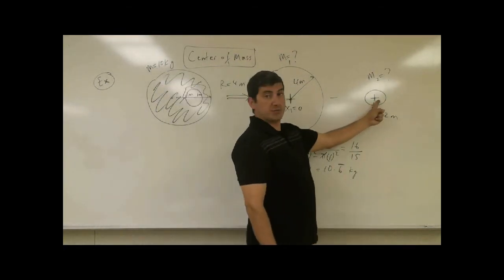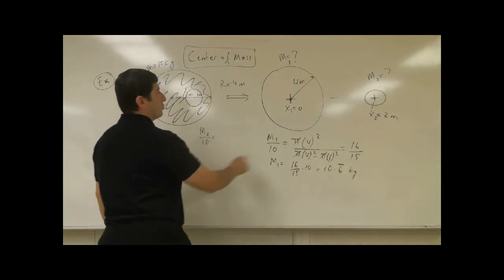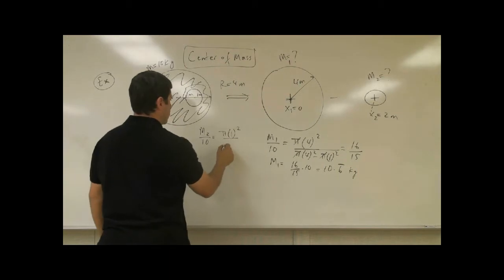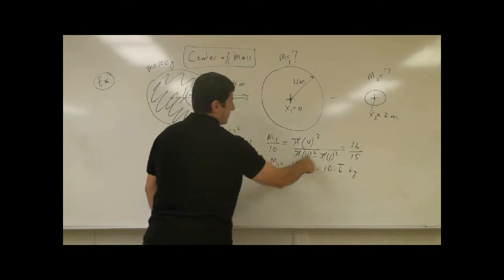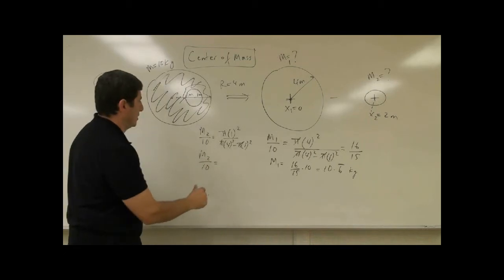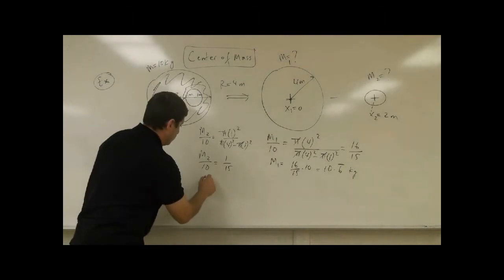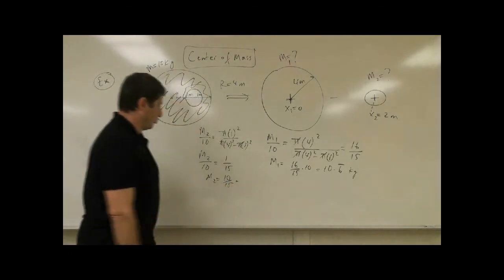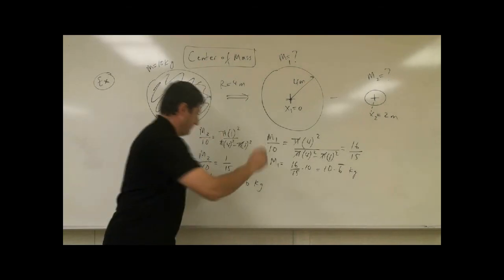Now, what is the mass of just the small cavity piece? We say M2 over 10 equals the area of the small piece, pi times 1 squared, divided by pi times 4 squared minus pi times 1 squared. The pi's cancel, so M2 over 10 equals 1 over 15. Therefore M2 equals 10 over 15, which is two-thirds, or 0.667 kilograms.